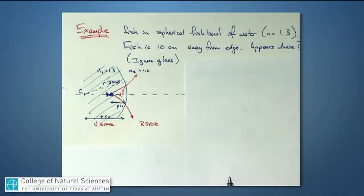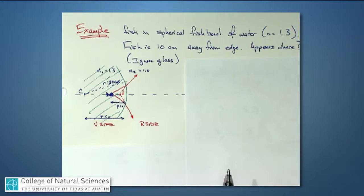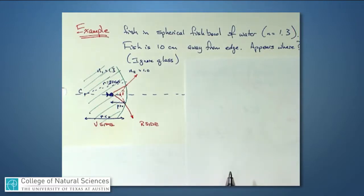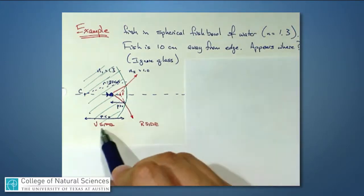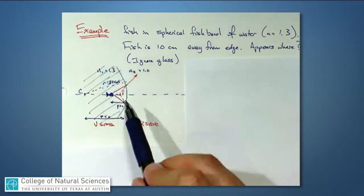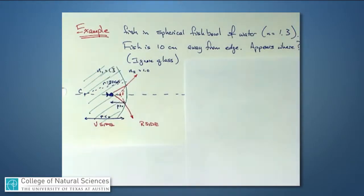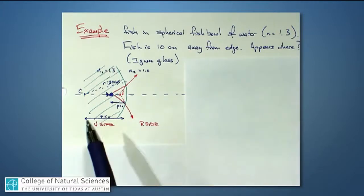I'd like to do an example where we consider some equations we developed for a spherical refracting surface and try to use them to predict the outcome of where an image would be given an object inside a refracting medium. Let me go back to the example of a fish underwater, but let's take an example where the fish is in a spherical fishbowl. The bottom of the fishbowl might be over here and the top up here, with a little fish swimming inside.